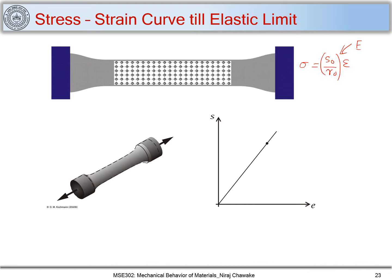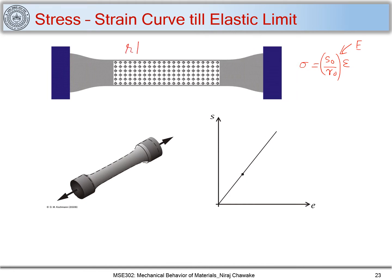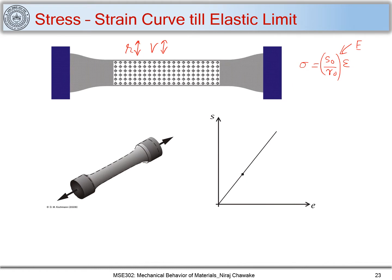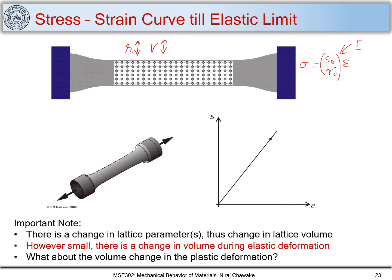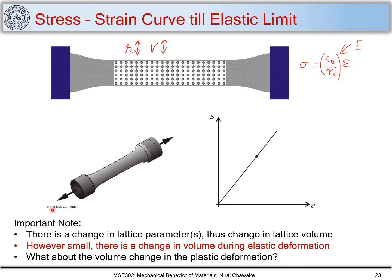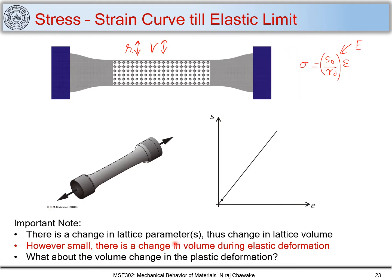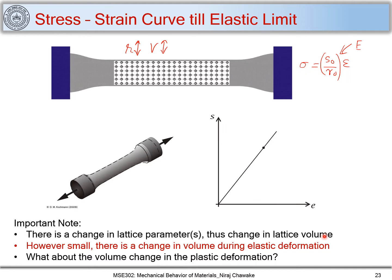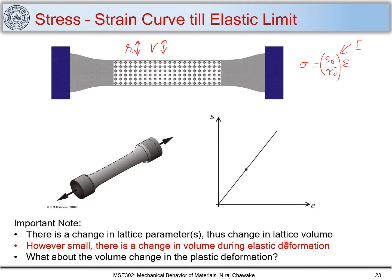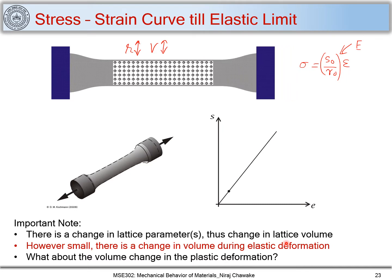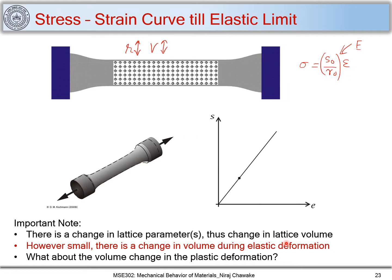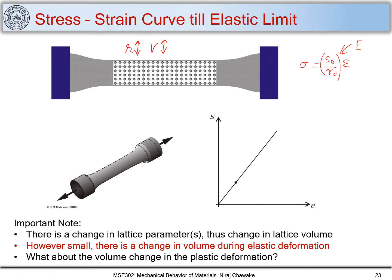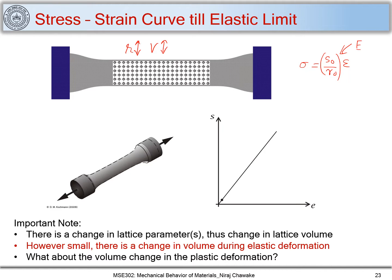So what I can say is that when I'm stretching, R is stretching and getting relaxed. Similarly, the volume is changing here. The volume is getting changed. So I can clearly say that in elastic deformation there is a change in lattice parameter like R naught, and this will lead to the change in the lattice volume. However small, there is a change in volume during elastic deformation. If someone asks you is there any volume change during elastic deformation, yes there is little volume change during elastic deformation. What about the volume change in plastic deformation? We will see that when we discuss about plastic deformation in detail.